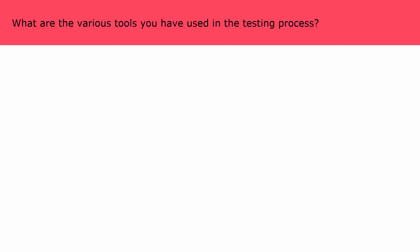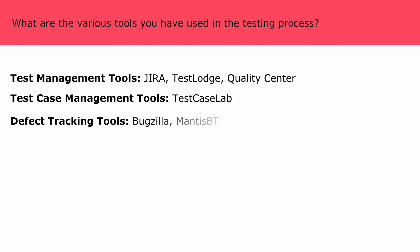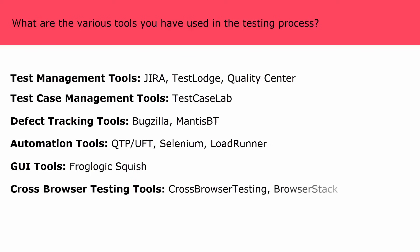What are the various tools you have used in the testing process? The tools used during the testing process are: test management tools — Jira, TestLodge, Quality Center; test case management tools — Test Case Lab; defect tracking tools — Bugzilla, MantisBT; automation tools — QTP or UFT, Selenium, LoadRunner; GUI tools — Frog Logic; and cross browser testing tools — CrossBrowserTesting, BrowserStack.